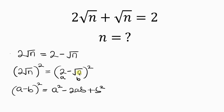Comparing, we see that a is 2 and b is the square root of n. Now let's expand the left hand side — the square affects the 2, giving 2 squared, and also affects the square root of n, giving the square root of n squared.